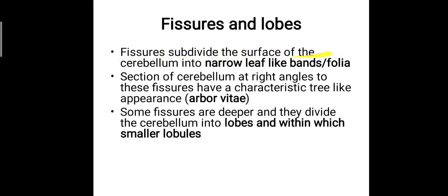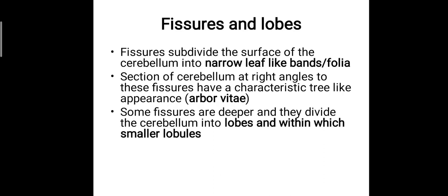The fissures subdivide the surface of the cerebellum into narrow leaf-like bands named folia. Folia means a leaf-like structure, so narrow leaf-like bands are formed by the fissures on the surface of the cerebellum. If you take a section at right angles to these fissures, inside you can see a characteristic tree-like appearance called arborvitae — a particular point to remember. If you take a cross section and look inside, there will be a tree-like pattern visible, termed the arborvitae.